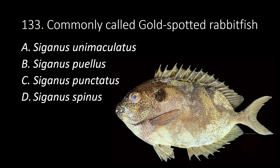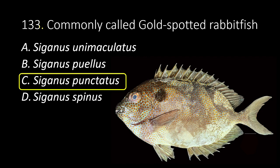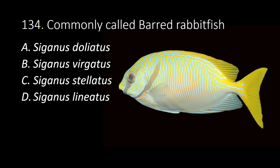133. Commonly called gold-spotted rabbit fish. A. Siganus nimacolatus. B. Siganus puellus. C. Siganus punctatus. D. Siganus spinus. The answer is C, Siganus punctatus.